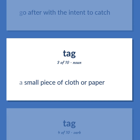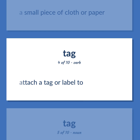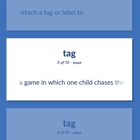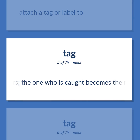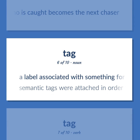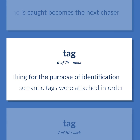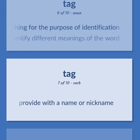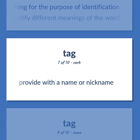Tag: A small piece of cloth or paper. Attach a tag or label to. A game in which one child chases the others — the one who is caught becomes the next chaser. A label associated with something for the purpose of identification — semantic tags were attached in order to identify different meanings of the word. Provide with a name or nickname.